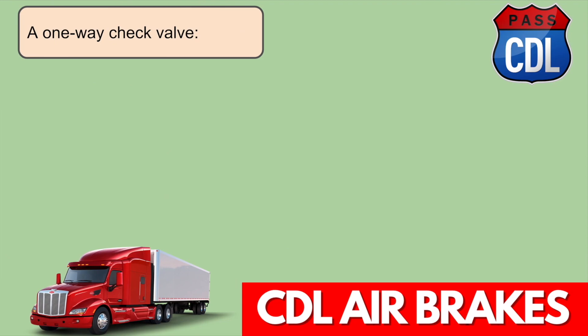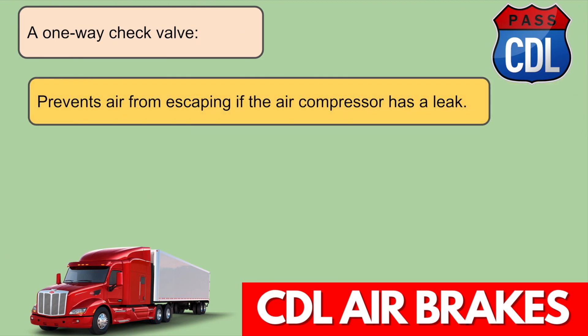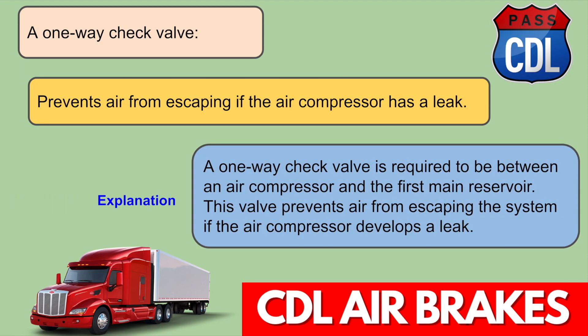A one-way check valve prevents air from escaping if the air compressor has a leak. A one-way check valve is required between an air compressor and the first main reservoir. This valve prevents air from escaping the system if the air compressor develops a leak.